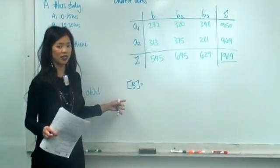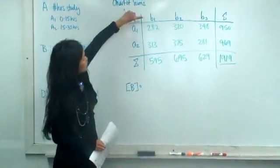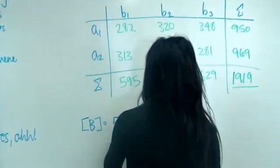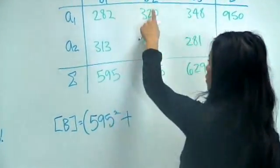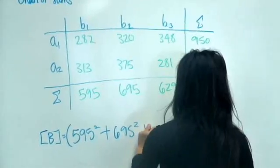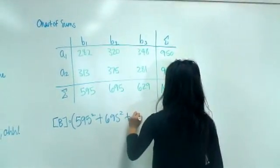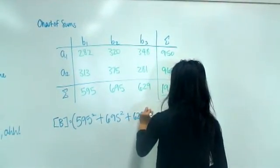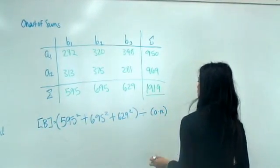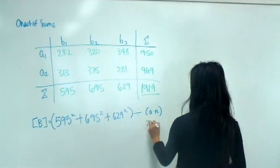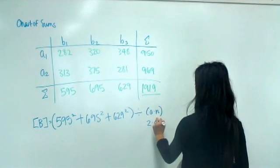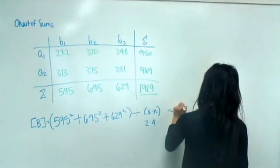For the B bracket term, we do the same thing but with Bs. The sum of B1 is 595 squared, plus the sum of B2 which is 695 squared, plus the sum of B3 which is 629 squared. Divide by everything except B, which is A times n — A has two groups, and lowercase n is 4. That gives another very large number.